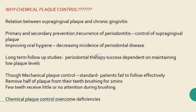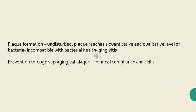Though we use interdental aids as well, few teeth receive little or no attention during brushing. That is the reason we need chemical plaque control — to overcome the deficiencies of mechanical plaque control. Plaque formation, if undisturbed, reaches a quantitative and qualitative level of bacteria incompatible with oral health and will lead to gingivitis. Prevention of supragingival plaque through chemical control should have minimal compliance and skill requirements.